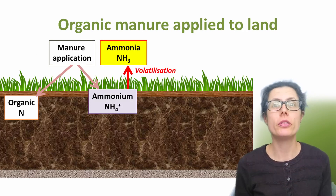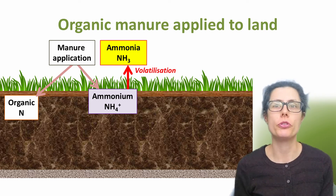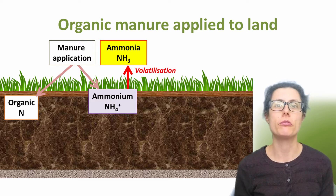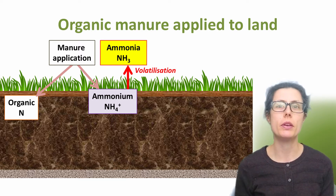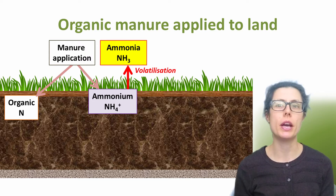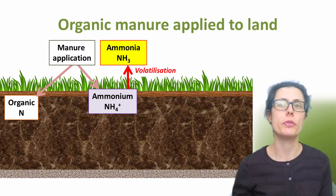What happens to the nitrogen when organic manures are applied to land? The organic nitrogen portion of organic material is shown on the left. This is released slowly over a period of months to years, whereas the ammonium or uric acid is more readily available to the crop. Some of the ammonium on the soil surface may be converted to ammonia gas. Volatilisation, as shown in red, is the name for this conversion of ammonium to ammonia gas which is released to the atmosphere.